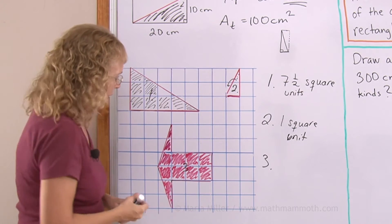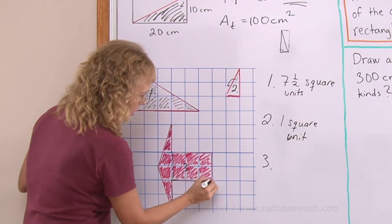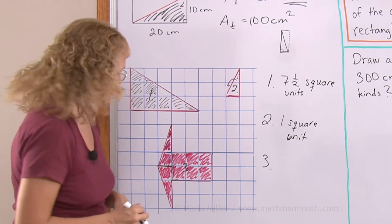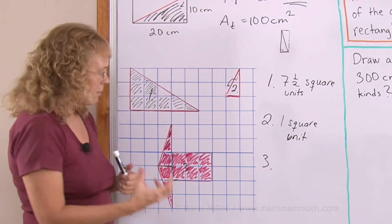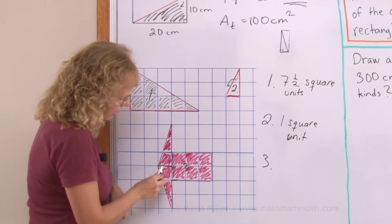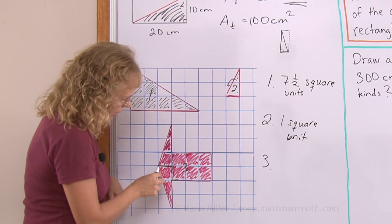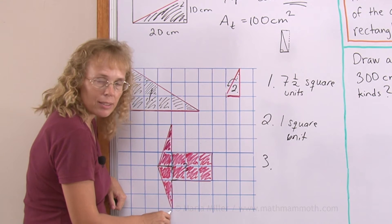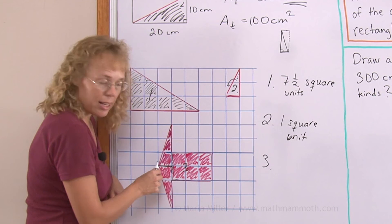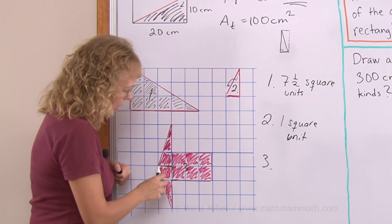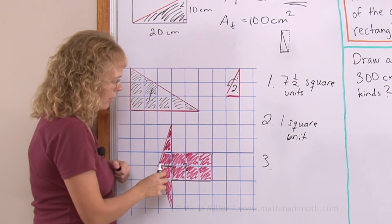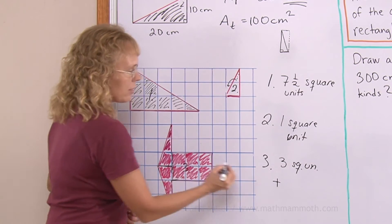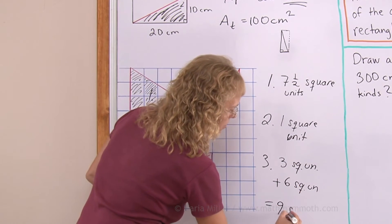This one is a compound shape. It has a rectangle here, and then two right triangles — this one here and the other one here. I can calculate the total area by adding all these parts. The rectangle that corresponds to each triangle is three units by one unit, so three times one is three. The area of each triangle is one and a half square units — one and a half plus one and a half is three square units for the two triangles.